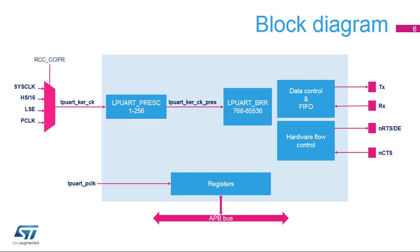This is the LP UART block diagram. The LP UART clock source, named LP UART-KER-CK, can be selected from several sources: peripheral clock, sysclock, high-speed internal 16 MHz oscillator named HSI-16, or low-speed external oscillator named LSE. The LP UART clock source is divided by a programmable factor in the LP UART-PRESC register in range 1 to 256.